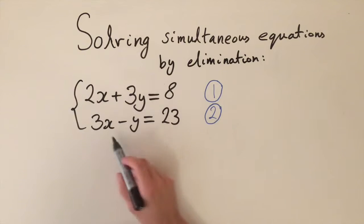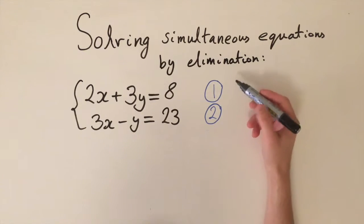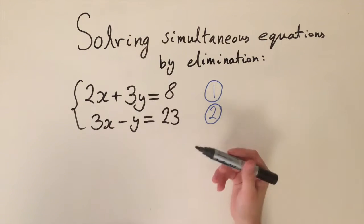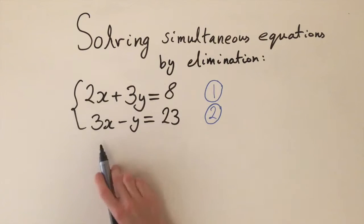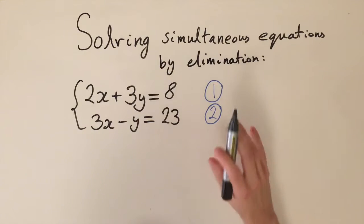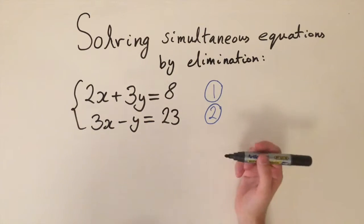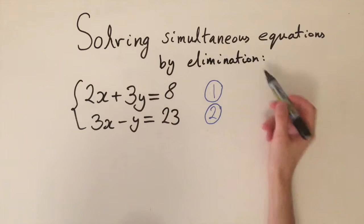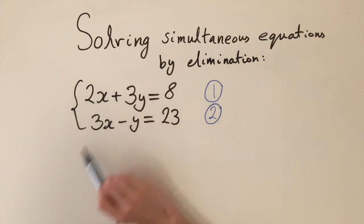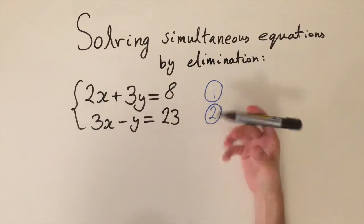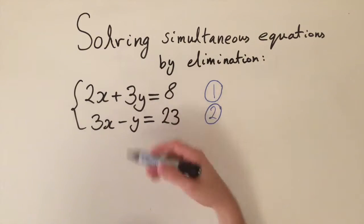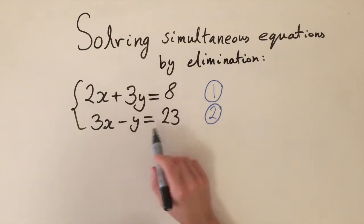I've labeled these equation one and equation two, and it's important to keep track of what you're doing to each equation. There are two things you can do to manipulate an equation: you can multiply both sides by a number, or you can add or subtract equations together. For elimination, we want to eliminate one of the variables by adding equations together or multiplying by a number, leaving an equation in just one variable which we can solve.